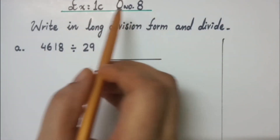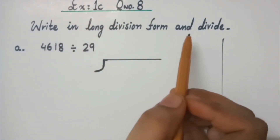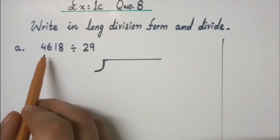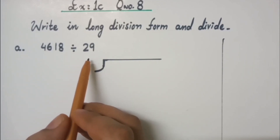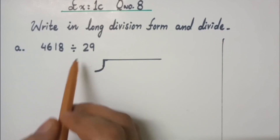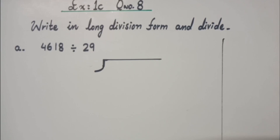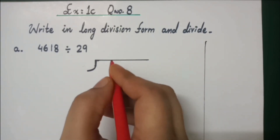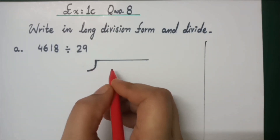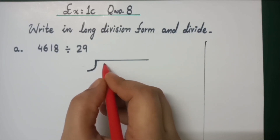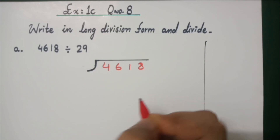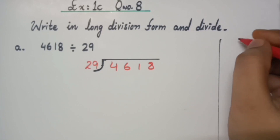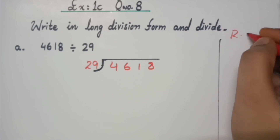Let's solve question number 8 of the same exercise. The question is: write in long division form and then divide. The question 4,618 divided by 29 is written horizontally. We solve it in vertical long division form. You can see the division symbol here. We write 4,618 inside the symbol and divide it by 29. Keep a rough work column at the right side of your copy.